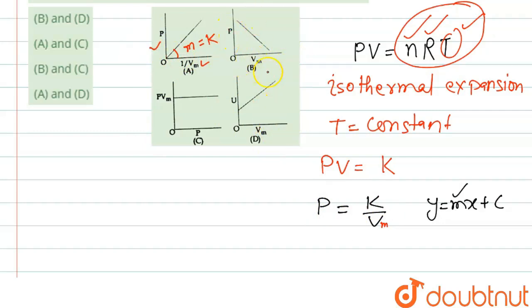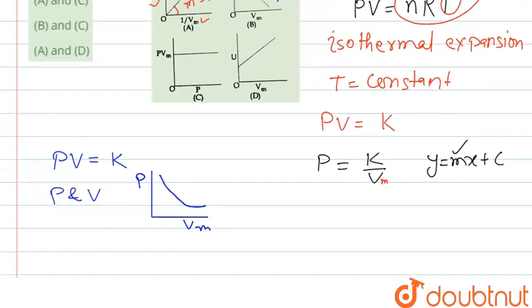Now coming to the second graph, the graph is between P and Vm. So if we write for this, we have PV that is constant. And if we draw the graph between P and V, then graph will be like parabola. But here we can see that this is a straight line going down, so this is the wrong graph.